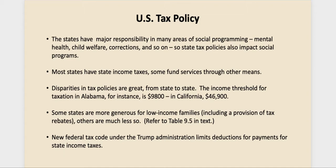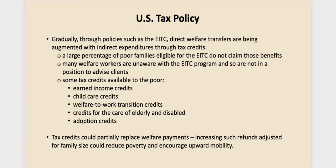Through policies like the earned income tax credit, direct welfare transfers are being augmented with indirect expenditures through tax credits — refunds, rebates, and deductions that put money in the pockets of lower-wage individuals. However, a large percentage of poor families eligible for the EITC don't claim the benefits — many don't even know about it. If they have a low enough income, they probably don't even file a tax return. Welfare workers are often not familiar with the EITC either and don't tell their clients about it, but helping clients claim tax credits they have coming is one way to help them climb out of poverty.